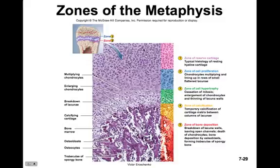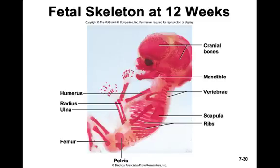Cartilage grows in a downward direction and osseous tissue grows up over that cartilage. As more cartilage is produced in the epiphyseal growth plate, more bone replaces it, and thus the bone is growing — happening on either side of the epiphysis. Here's an image of a fetal skeleton at 12 weeks, where most of the skeleton is cartilaginous, though some of the larger bones are beginning to ossify.